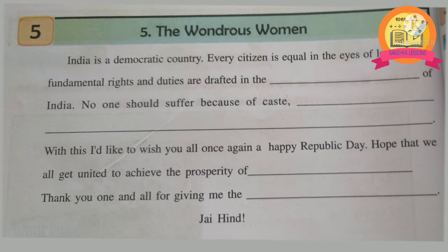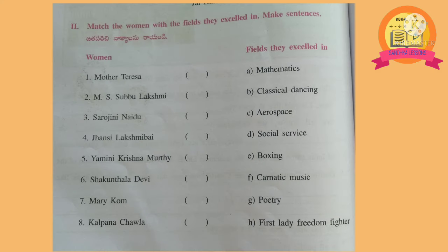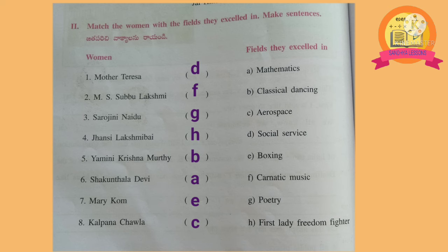2nd Roman: match the women with the fields they excelled in and make sentences. Mother Teresa – Social Service. M.S. Subbulakshmi – Carnatic Music. Sarojini Naidu – Poetry. Jhansi Lakshmi Bai – First Lady Freedom Fighter. Yamini Krishnamurti – Classical Dancing. Shakuntala Devi – Mathematics. Mary Kom – Boxing. Kalpana Chawla – Aerospace.